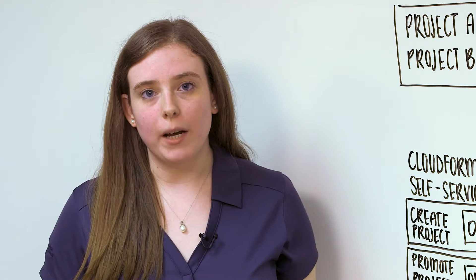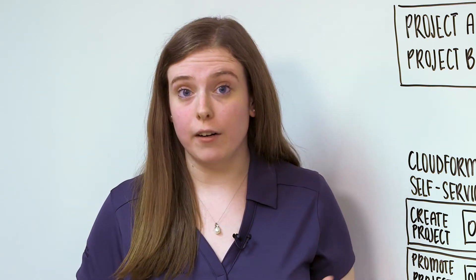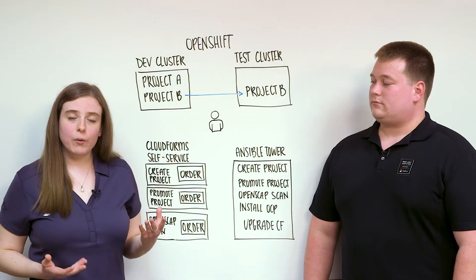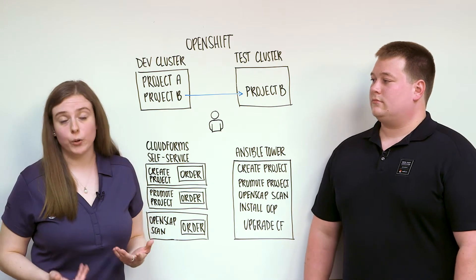Today we're going to be talking about Red Hat OpenShift Container Platform, Red Hat CloudForms, and Ansible Tower by Red Hat. OpenShift is a container platform for deploying and managing applications in the cloud. Tower is a way to manage your configuration management scripts that contains a simple and easy UI. And CloudForms is a way to bring everything together and manage your entire environment.